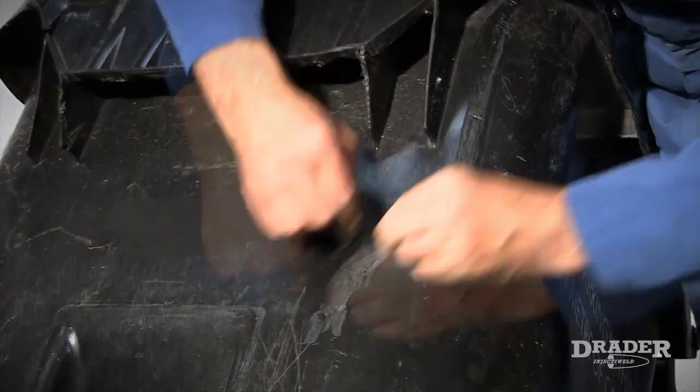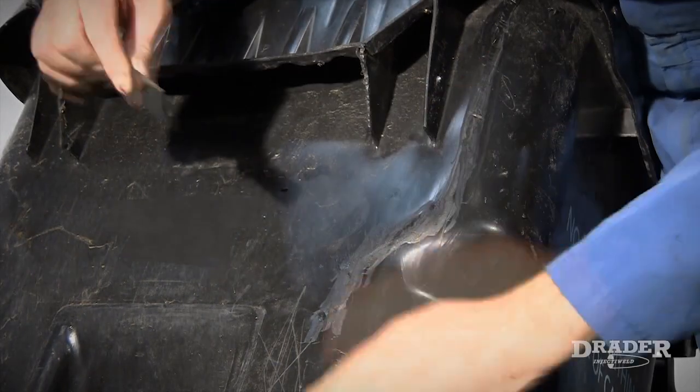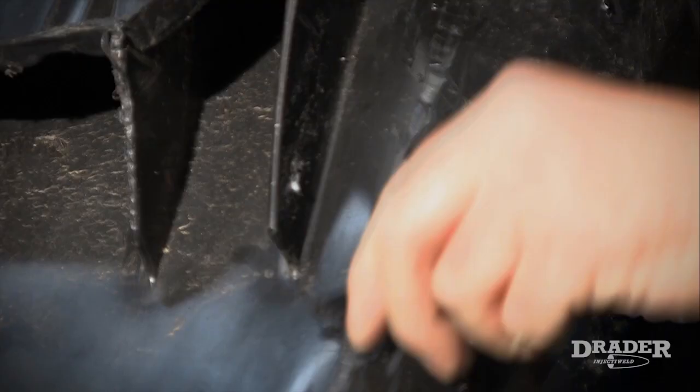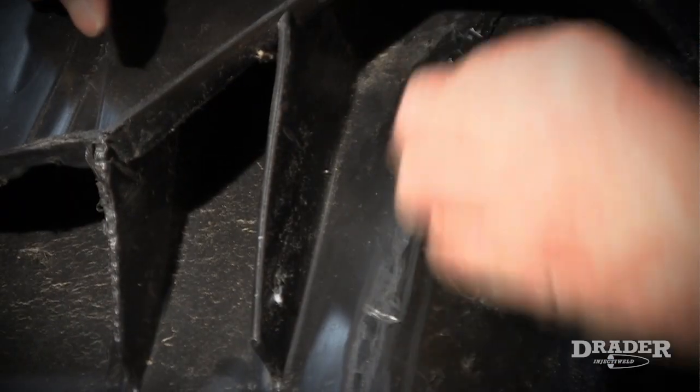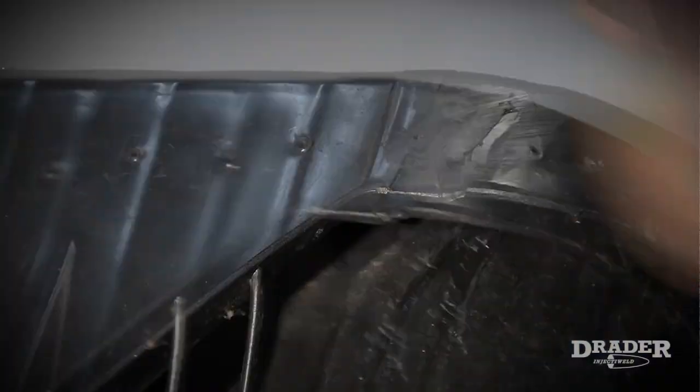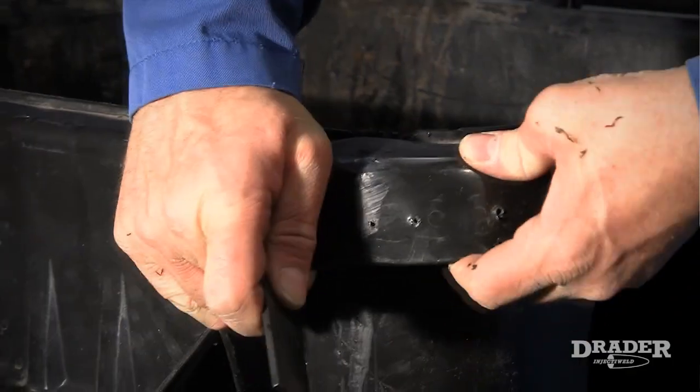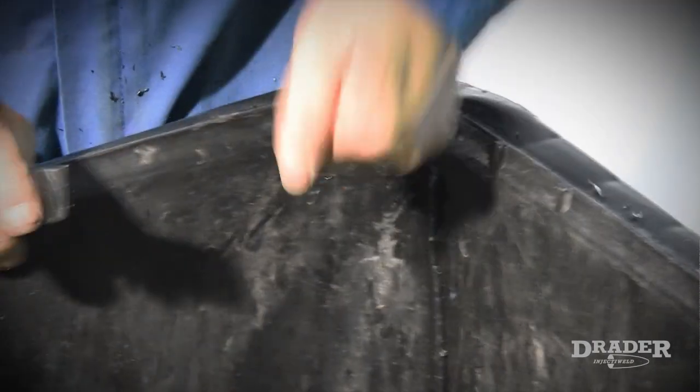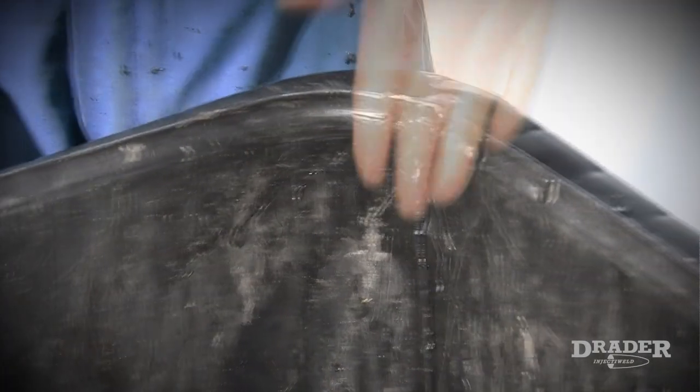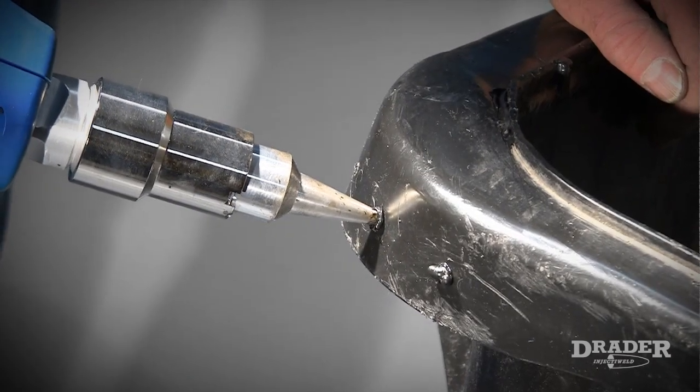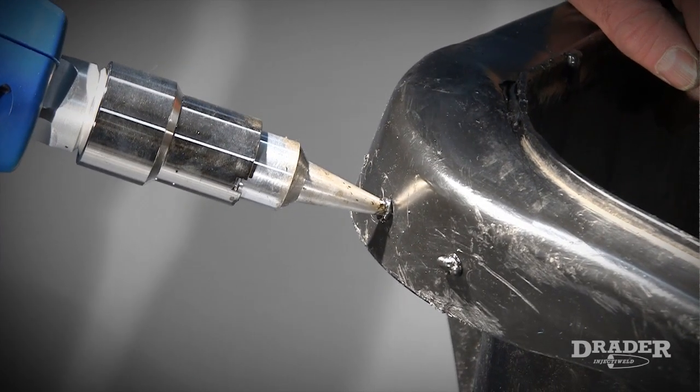I am using the Drader scraper blade to get rid of any welding undercuts. This can add to the strength of the repair. Now to fill in a couple of holes and then we are done.